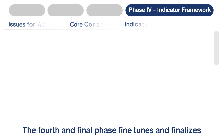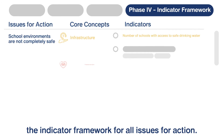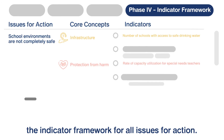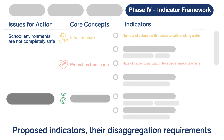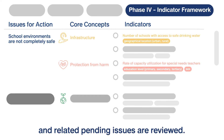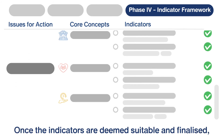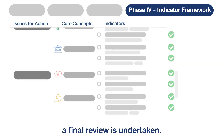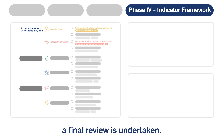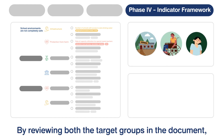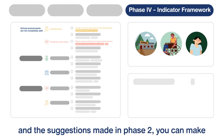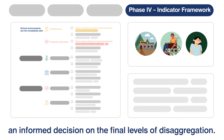The fourth and final phase fine-tunes and finalizes the indicator framework for all issues for action. Proposed indicators, their disaggregation requirements and related pending issues are reviewed. Once the indicators are deemed suitable and finalized, a final review is undertaken. By reviewing both the target groups in the document and the suggestions made in phase two, you can make an informed decision on the final levels of disaggregation.